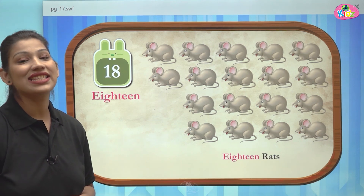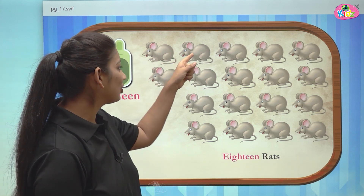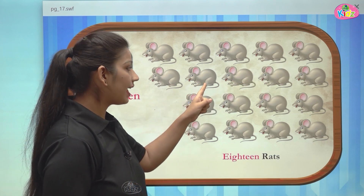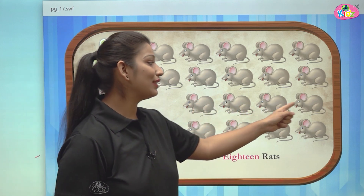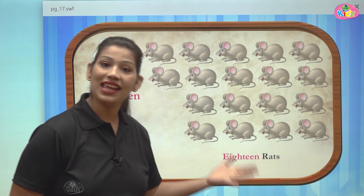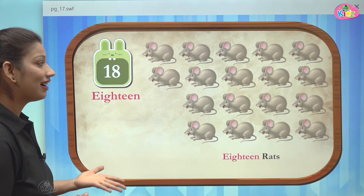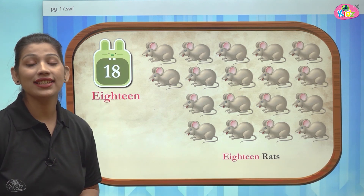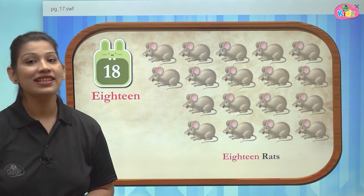And here we can see rats. Let us count the number of rats here: 1, 2, 3, 4, 5, 6, 7, 8, 9, 10, 11, 12, 13, 14, 15, 16, 17 and 18. There are total 18 rats. This is the number 18 — a two digit number that comes after 17.